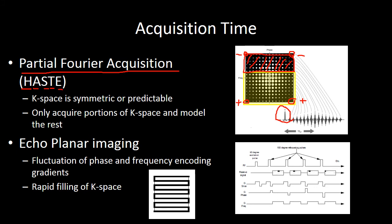Another technique is echo planar imaging. In echo planar imaging, instead of having a fixed phase and frequency-encoded gradient, you fluctuate the phase and frequency-encoded gradients throughout your acquisition, generating multiple echoes and rapidly filling k-space. Echo planar imaging is a way to acquire a large amount of data in a rapid time, and it's frequently used with diffusion weighted imaging.